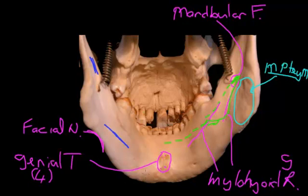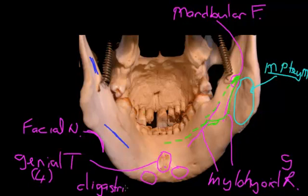If you look carefully, you'll see a little dent just there, with a symmetric one on the other side. That dent is where the digastric muscle attaches — the anterior belly of the digastric — and it's called the digastric fossa. The mylohyoid nerve supplies two things: the mylohyoid muscle, and it also comes down to supply the digastric as well.